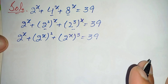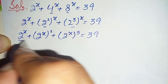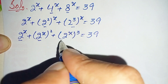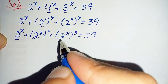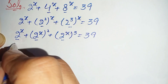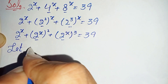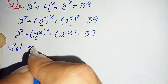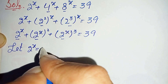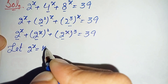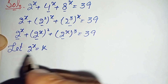Now, looking at the left hand side, in all the terms there is 2 raised to power x in the base. So here we will make a substitution. Let us suppose 2 raised to power x is equal to another variable k. So next we will replace these bases with k.